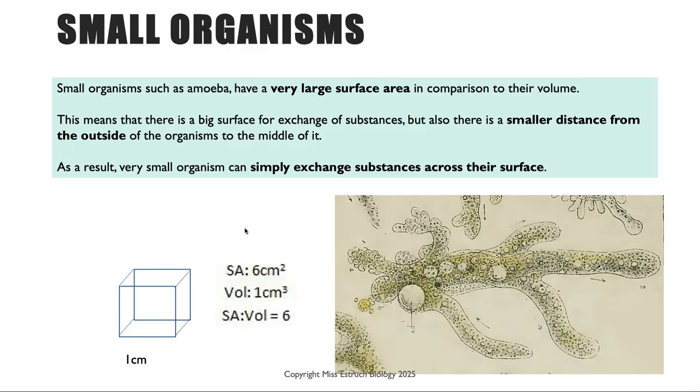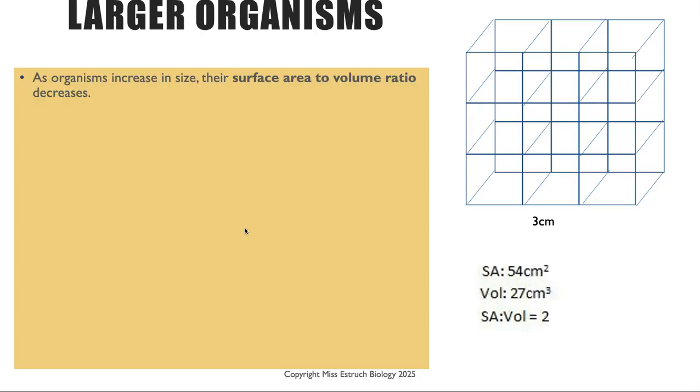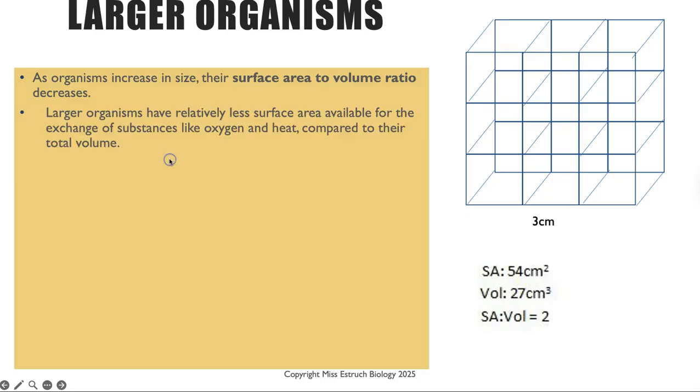Whereas in contrast larger organisms, because they are bigger in size, that means their surface area to volume ratio is smaller and that means there is a relatively less surface area available for the exchange of substances such as oxygen across the surface compared to their volume. And that's why larger organisms such as mammals, for example humans, have evolved to have these specialized organ systems, for example the respiratory system where gases are exchanged.